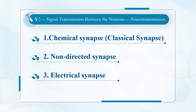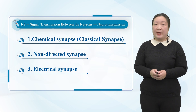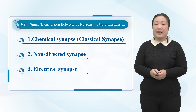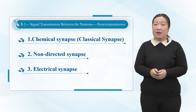Now we are talking about a very important concept: synapses. A synapse is a very special structure formed by the contact between the axon end of one neuron and the cell body or a protrusion of other neurons. The junction of synapses is a special structure formed by contact between neurons and effector cells. According to the different media, synapses are divided into chemical synapses, non-directed synapses, and electrical synapses.